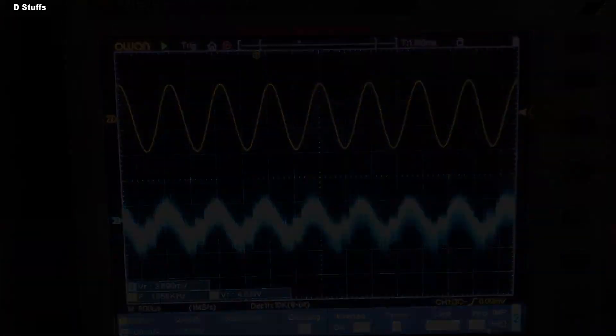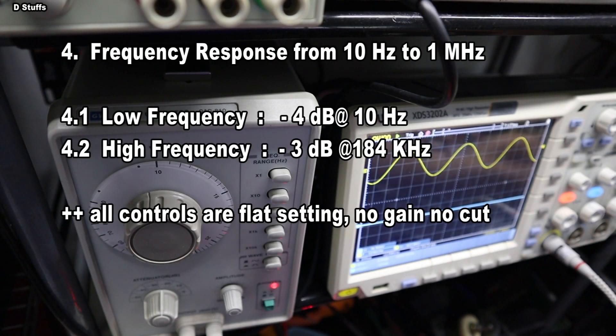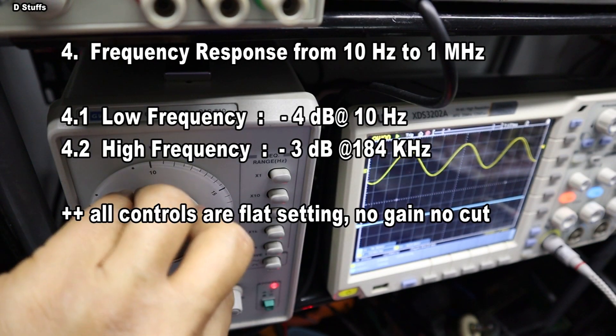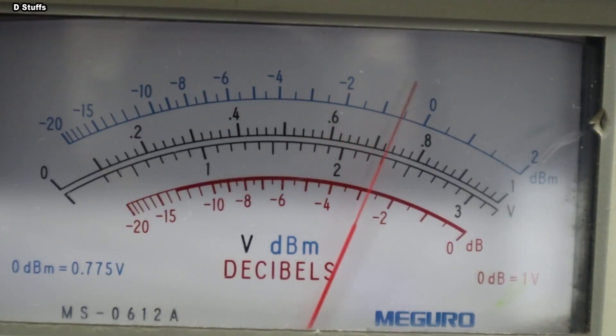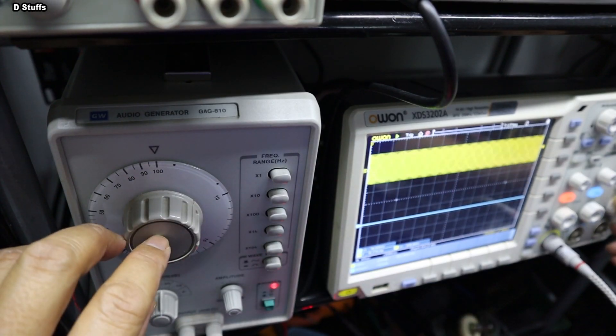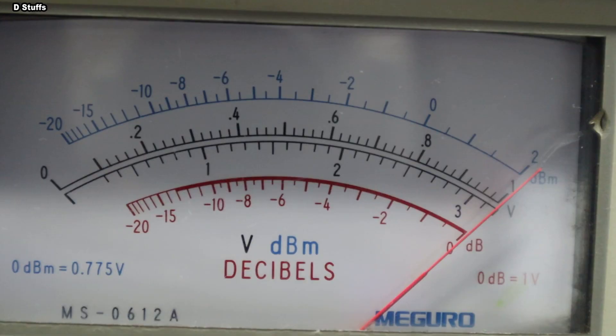The fourth test is the frequency response of the PATC. What I'm going to do here is set the output to 0 dB, or that is about 1 V RMS, and then sweep the frequency and monitor the minus 3 dB point. To do that, I'm going to use the Meguro distortion meter that reads in dB, and here you go.